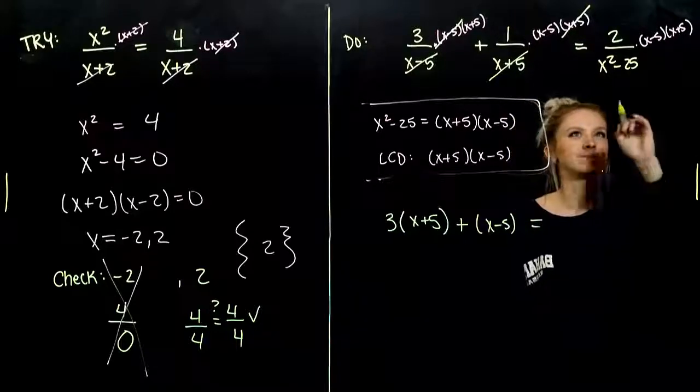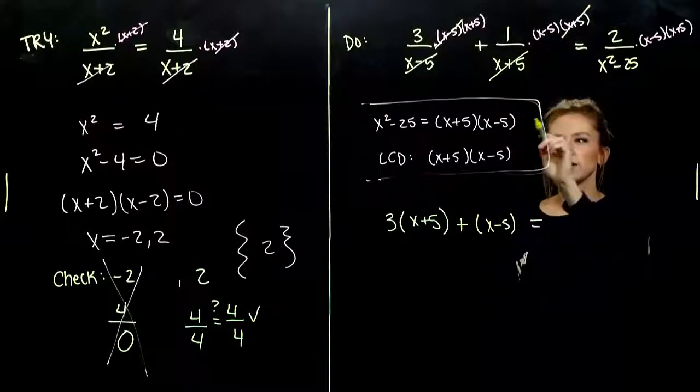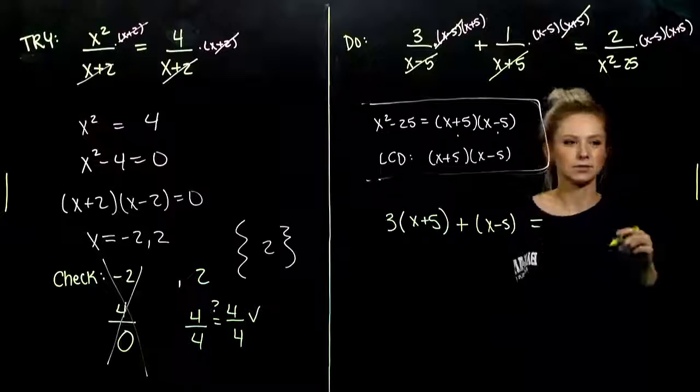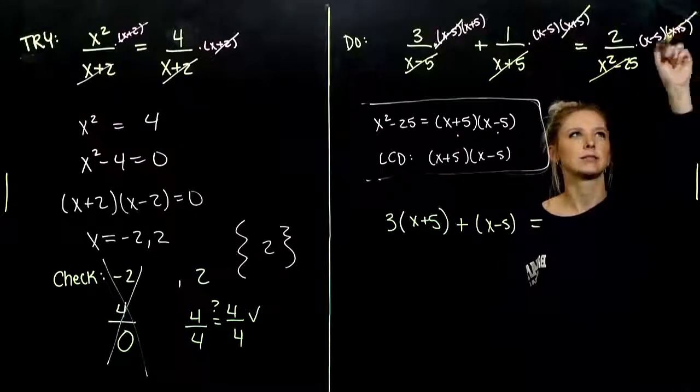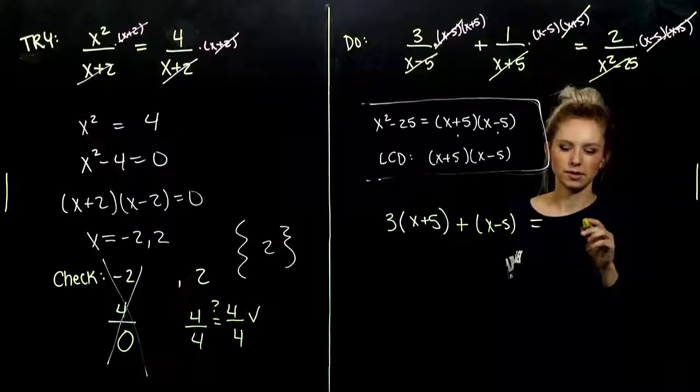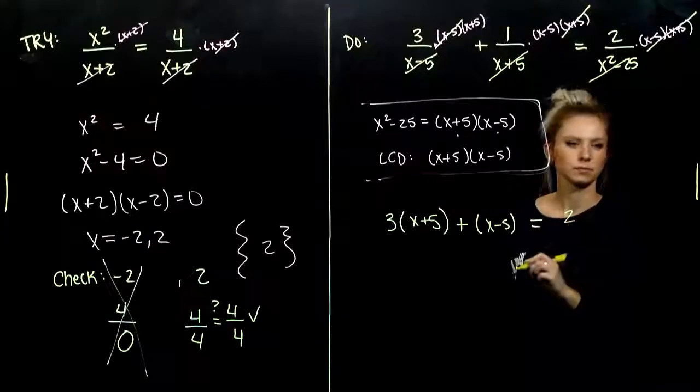And, last, X squared minus 25 has each of those factors involved. So, that's going to cancel everything. And what are we left with in the numerator? 2.